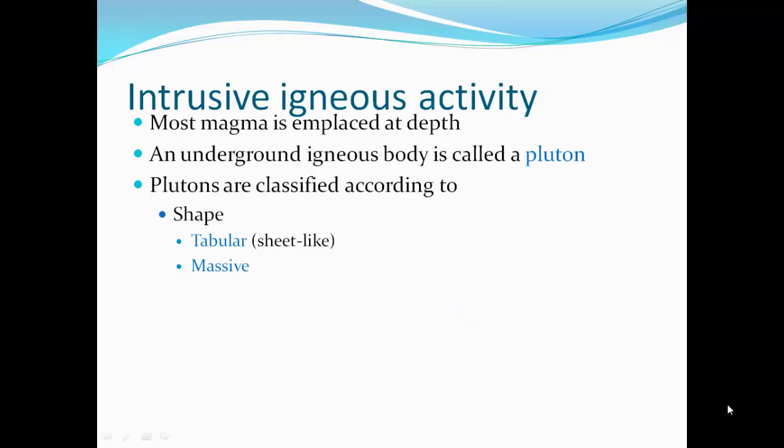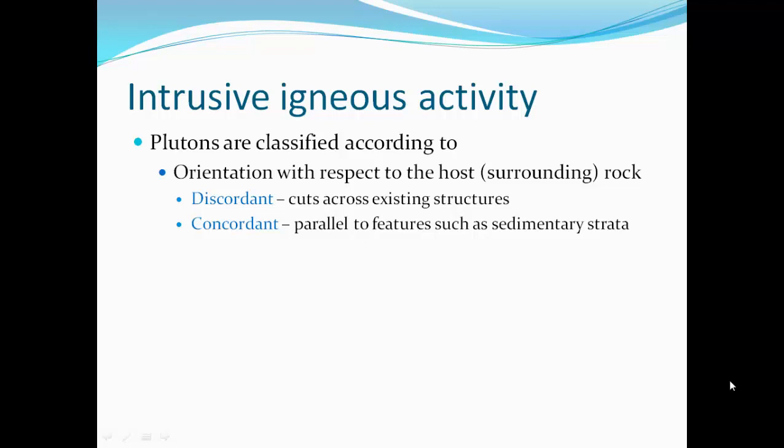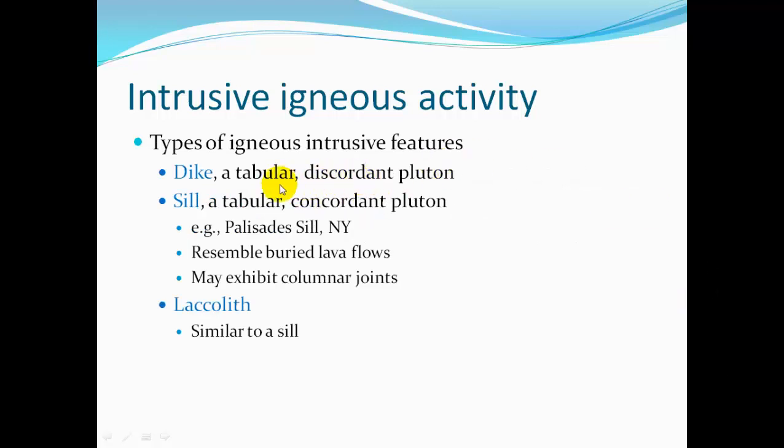Most magma is underground. Underground igneous bodies that form from this magma are called plutons — rocks formed from cooling magma, classified according to their shape. A tabular pluton is sheet-like, very large but thin. A massive pluton is a big bulbous body of rock. If a tabular pluton cuts across rock layers, it's called discordant. If it cuts between features of sedimentary strata, it's called concordant. A discordant tabular pluton that cuts across sedimentary layers is called a dike, and a concordant one that goes between sedimentary layers is called a sill.